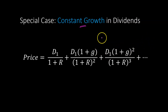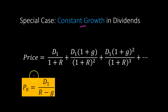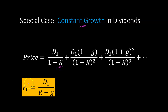Those familiar with discounted cash flow valuation will recognize this immediately as a growing perpetuity. The present value of all these cash flows is simply the first year cash flow D1 divided by (R minus G), where R is your discount rate and G is your growth rate. So P0, the price of the stock today, is simply D1 over (R minus G).